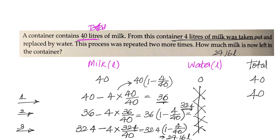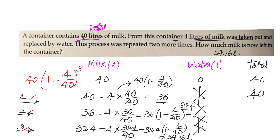If you observe, we started with 40, then multiplied by 1 minus 4 by 40 each time — once, twice, three times. So the answer is 40 into 1 minus 4 by 40 whole cubed. We can generalize this: if there are x liters of milk, y liters removed and replaced by water, and we do this n times, then the milk left after n dilutions is x into 1 minus y by x whole to the power of n.